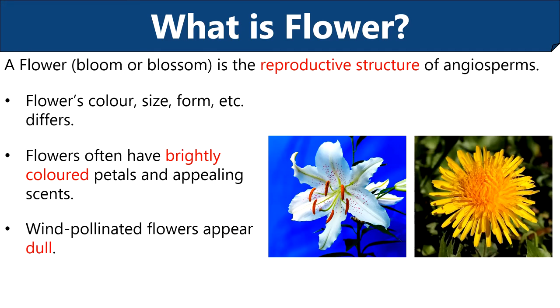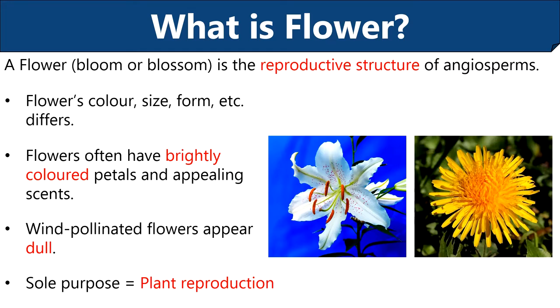However, the wind pollinated flowers like dandelion flowers usually appear dull in color. Then it is important to know the sole purpose of flowers. We know that flowers are the reproductive structures carrying both male and female organs, so they play a major role in plant reproduction by forming fruits and seeds. Further, the seed dispersal ensures the growth and distribution of plants. Now we will discuss the types of flowers.